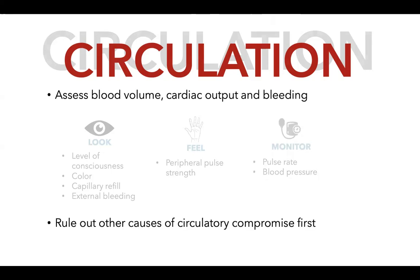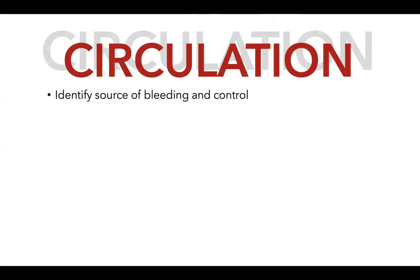Before diagnosing hemorrhagic shock, rule out obstructive shock first — specifically tension pneumothorax, cardiac tamponade, and massive hemothorax. Once hemorrhagic shock is confirmed, the next objective is to identify the source of bleeding and control it.